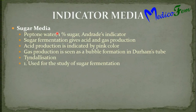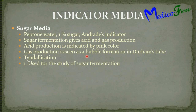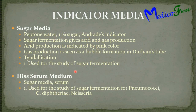Indicator medium: sugar medium is also an indicator medium. It contains peptone water and 1% sugar. Neutral red indicator acts as an indicator of growth. When sugar is fermented, it gives production of acid and/or gas. Acid production is indicated by pink or red color in the medium. Gas production is seen as bubble formation in the Durham's tube. It is sterilized by tyndallization and used to demonstrate fermentation reactions of sugars by various bacteria.